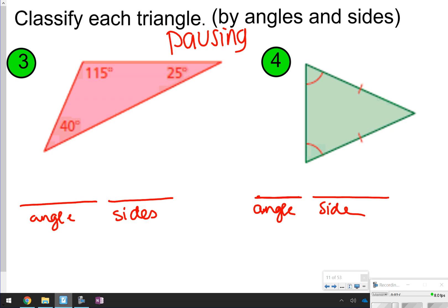All right, so number three has an obtuse angle, and the sides, notice there's no angles correct, all the same, so that means none of the sides are the same, so that would be scalene. So number three is an obtuse scalene triangle.